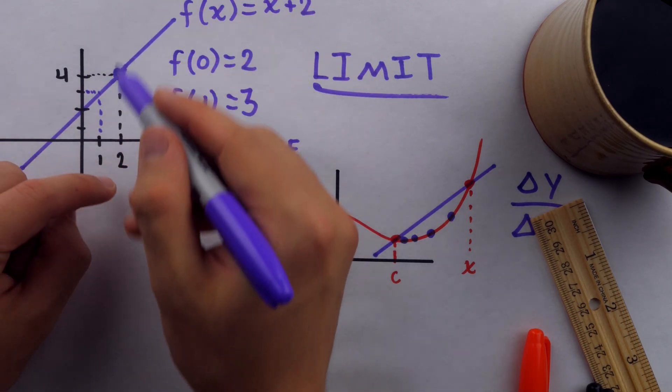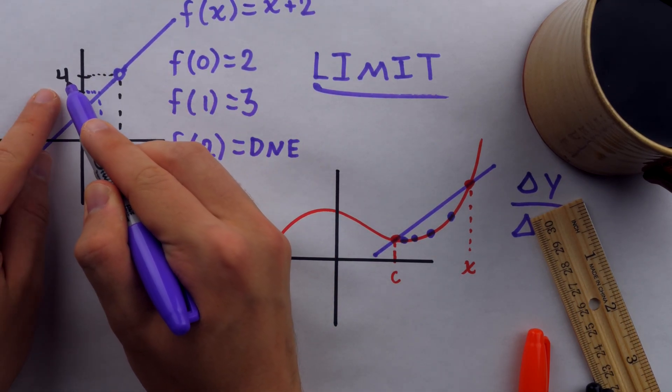The limit of the function, as x approaches 2, we would say is equal to 4.